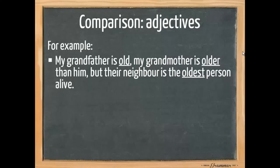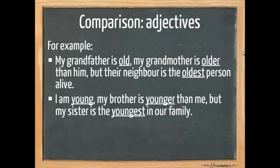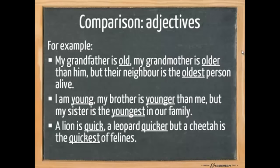But when we compare their neighbour to my grandmother and grandfather, or more, when we compare the neighbour of my grandmother and grandfather to the rest of the world, we must conclude that he is the oldest, so the superlative form. I am young, my brother is younger than me, but my sister is the youngest in our family. A lion is quick, a leopard is quicker, but a cheetah is the quickest of felines.